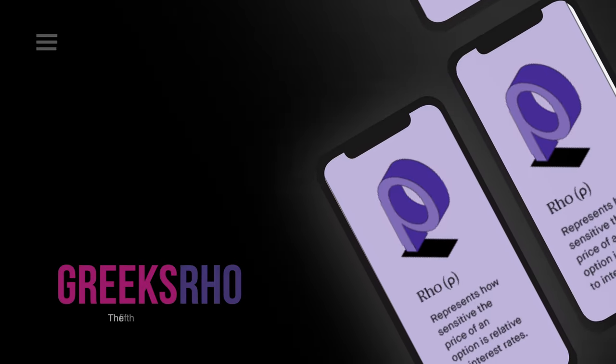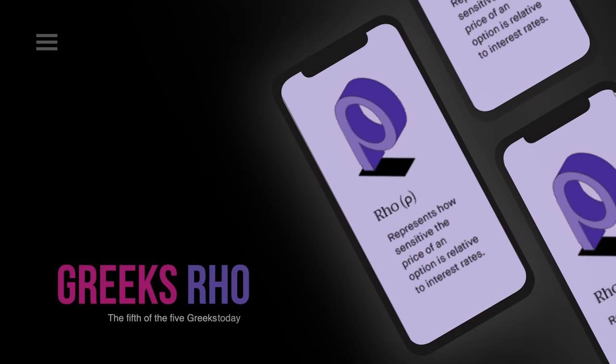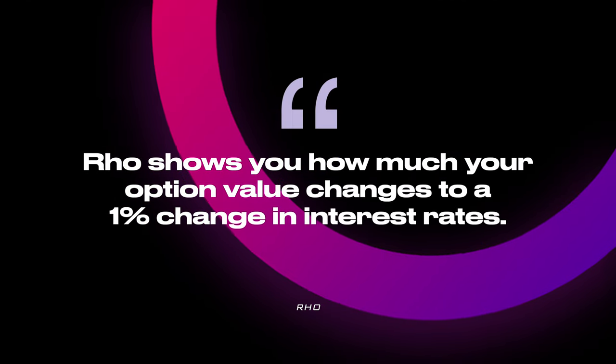Last but not least, Rho. Rho shows you how much your option value changes due to a 1% change in interest rates. As a beginner, I personally wouldn't spend too much time dissecting Rho every time, but it's important to know what will happen to your contract if interest rates go up or down.